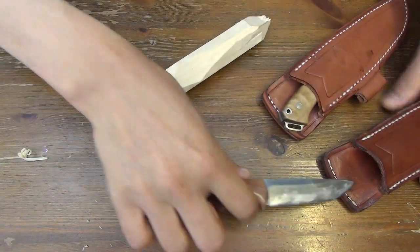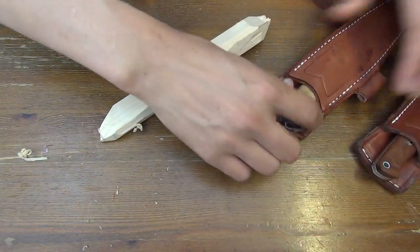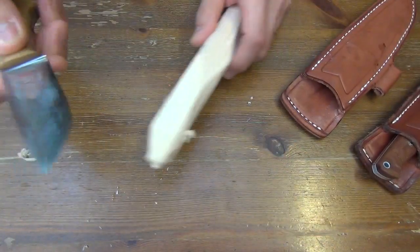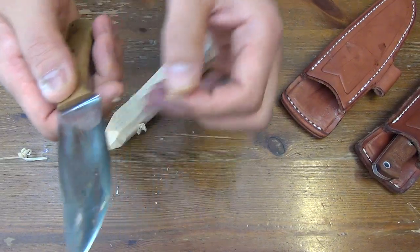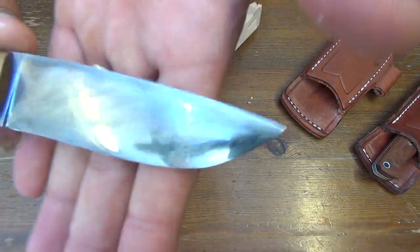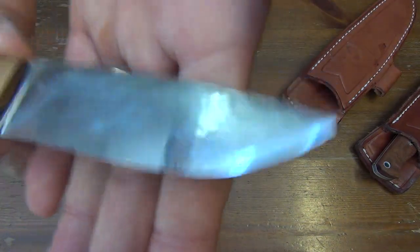Anyway, this is the sharpest bark river convex edge. Pretty continuous to the edge. No fatness near the edge.